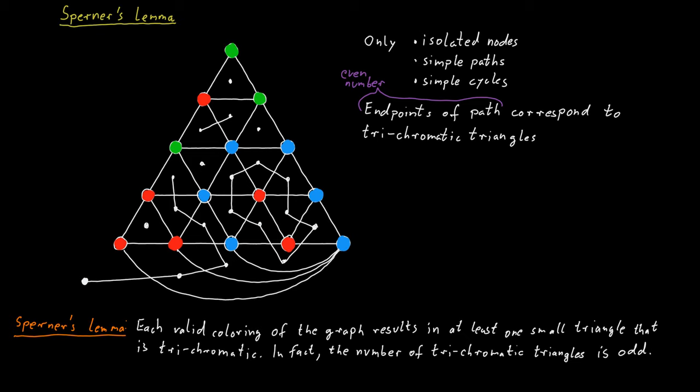And so that would lead us to the conclusion that we must have an even number of trichromatic triangles. But that's not our claim. Our claim is that we have an odd number of trichromatic triangles. So where's the mistake here?